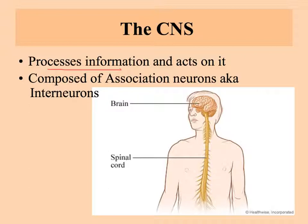Both sensory neurons and motor neurons take care of bringing information in and taking action out, but most of the central nervous system is composed of the association neurons, also called the interneurons. And so this is the processing, the analyzing, the thinking part of your nervous system.